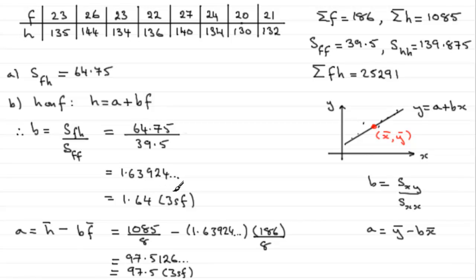So we can just say that therefore, the equation of that regression line, H on F is going to be H equals A, which we now know is 97.5 plus B, which is 1.64 multiplied by F. And there you go, there's that equation of the regression line.